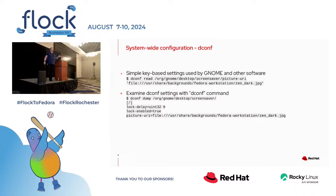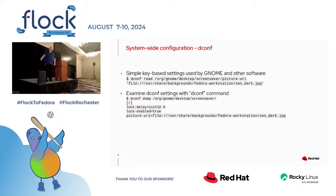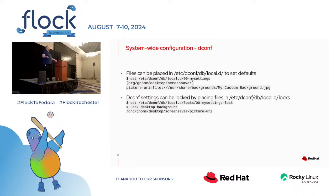The first thing I'm going to talk about is dconf. dconf is basically a key-value-based system used by a lot of tools including GNOME. You can examine various settings with the dconf command — for example, looking at what the default background picture is, or all the dconf settings for the screen saver. You can manage system-wide dconf settings by dropping files in /etc/dconf. This is really useful because you can also lock settings — so if you've got a policy that says the screen must lock after 15 minutes, you can set and lock it there.